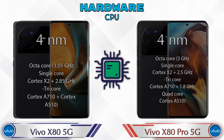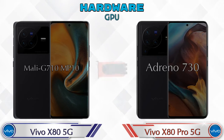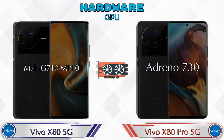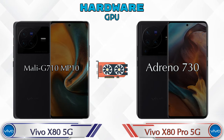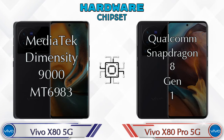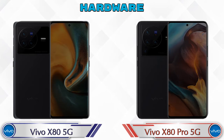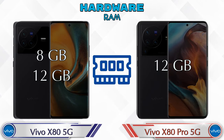First, let's see the details about the CPU. Talking about the GPU, the Vivo X85G has Mali G710 MP10 and the X80 Pro 5G has Adreno 730. If we talk about the chipset, MediaTek Dimensity 9000 MT6983 is available in the Vivo X85G, and Qualcomm Snapdragon 8 Gen 1 is available in the X80 Pro 5G.